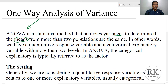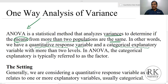Analysis of variance, also called ANOVA, is a statistical method that analyzes variances to determine if the means from more than two populations are the same. In other words, we have a quantitative response variable and a categorical explanatory variable with more than two levels. In ANOVA, the categorical explanatory variable is typically referred to as a factor. In SPSS, instead of a covariate, we enter the factor.